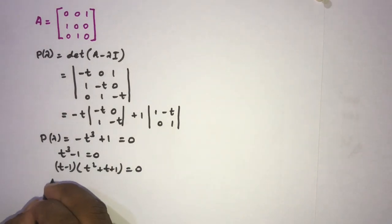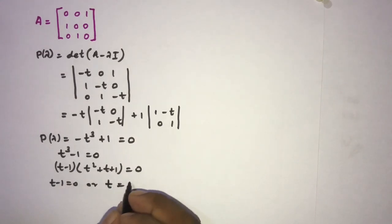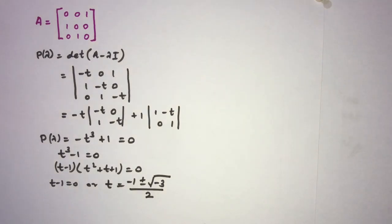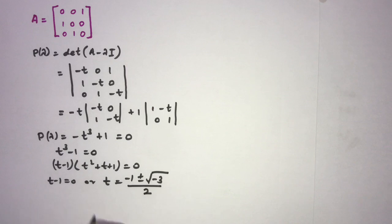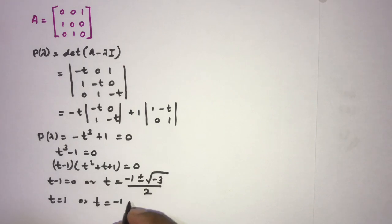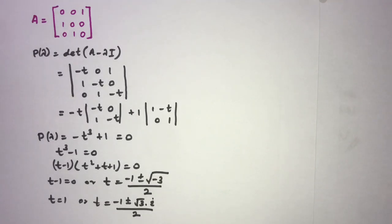From the quadratic factor t² + t + 1 = 0, we apply the quadratic formula: t equals minus 1 plus or minus the square root of 1 minus 4, giving square root of minus 3 over 2. Writing minus 1 as i², we get t equals minus 1 plus or minus (√3 · i) over 2. So we have three eigenvalues: t = 1, and t = (−1 ± i√3) / 2.